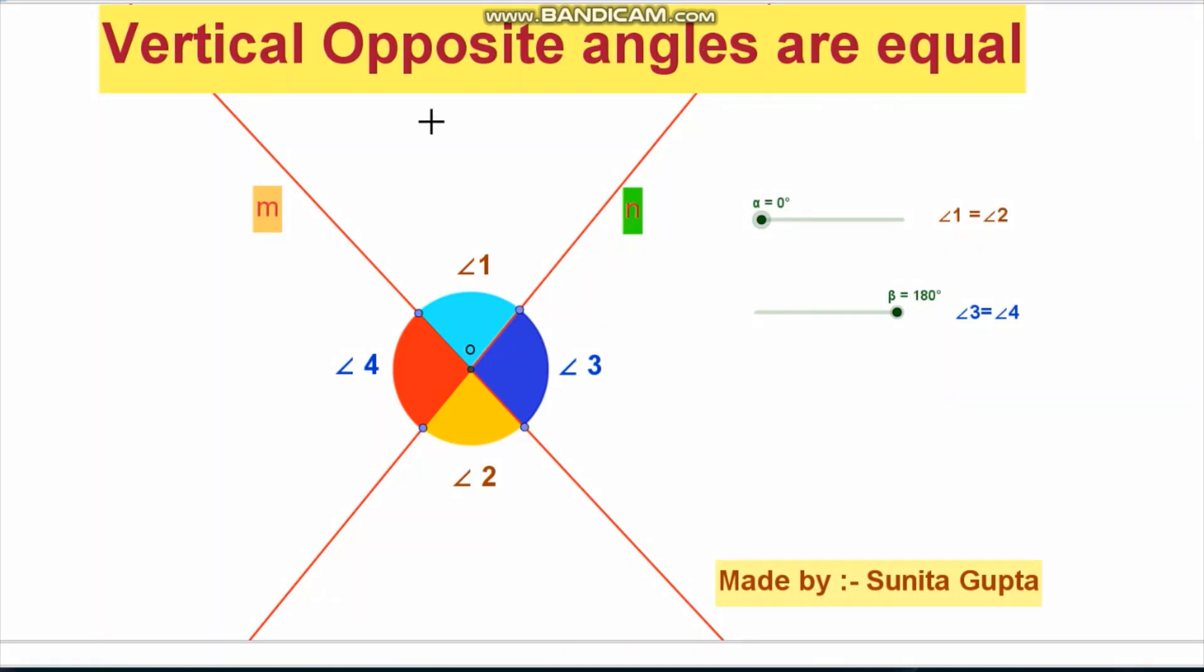Two lines intersect at point O, forming four angles: angle 1, angle 2, angle 3, and angle 4.